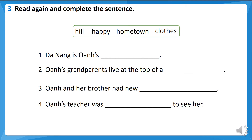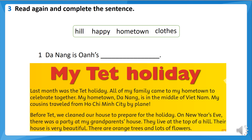It's activity number three — read again and complete the sentence. You have four sentences and four words in the box. Complete the sentences with the words. The first one: look at the sentence underlined in red — 'My hometown Da Nang is in the middle of Vietnam.' So the answer for number one is: Oanh's hometown is Da Nang.